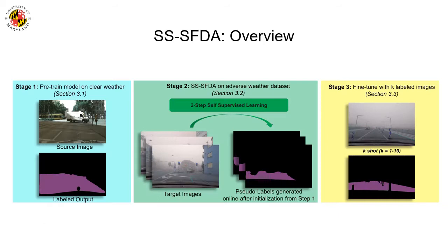Here is an overview of our approach. We first pre-train the network using a self-attentive attention autoencoder on a clear weather dataset. This generates a model that encapsulates knowledge about road pixels. This is followed by iterative two-stage self-supervised learning on the unlabeled target dataset. In stage 3, for heterogeneous weather datasets, we use a very small number of labeled images from the target domain to boost the performance of SSSFDA via model distillation.